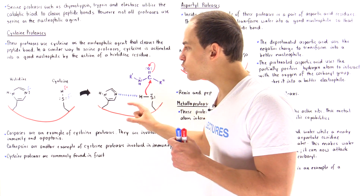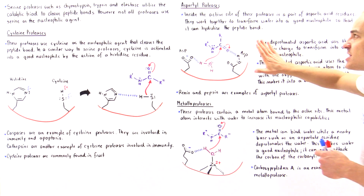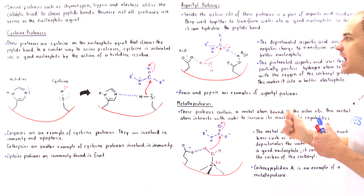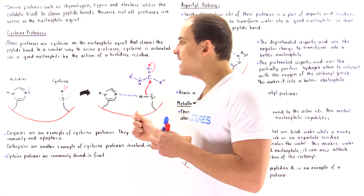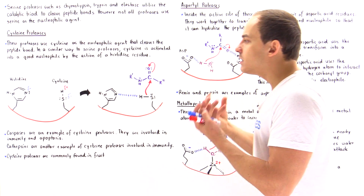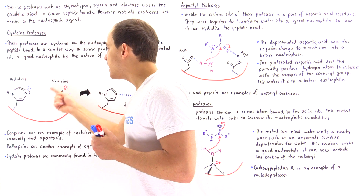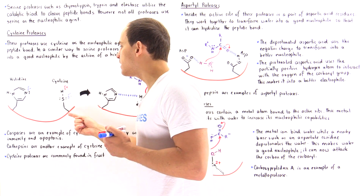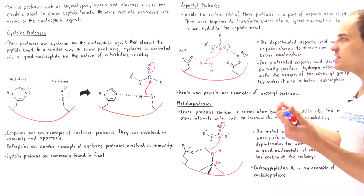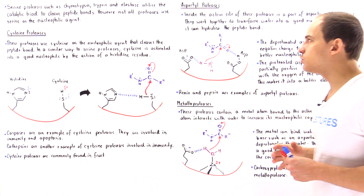The major difference between cysteine proteases and aspartate proteases is this: in cysteine and serine proteases, one of the residues inside the active site acts as a nucleophile. But in aspartate proteases, the residues don't actually act as nucleophiles — instead, it's the water that will ultimately act as the nucleophile. The similarity is that we still have to transform the water into a good nucleophile, just as we had to transform the cysteine into a strong nucleophile.